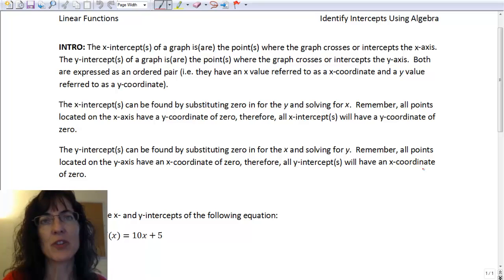The y-intercept is where the graph crosses the y-axis or the vertical axis. So both of those points, or however many points you have where you cross one axis or another, those are expressed as ordered pairs. So you have an x value and a y value.